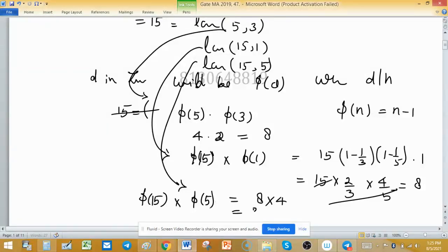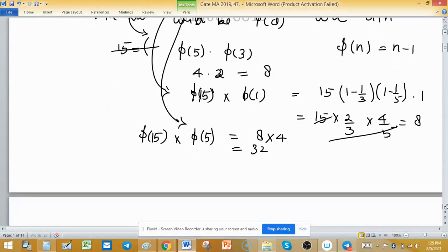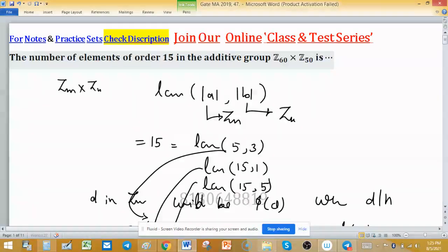So the total number of elements of order 15 is 32 + 8 + 8 = 48 elements having order 15 in Z₆₀ × Z₅₀. Remember one point: anyhow we have to form order 15 from elements which are coming from respective groups. So the answer is 48.